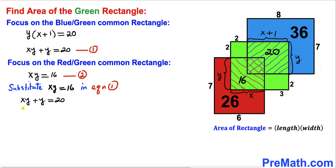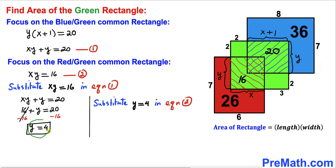Substituting into Equation 1: 16 plus y equals 20. Subtracting 16 from both sides, our y value turns out to be 4 units. Now plugging y equals 4 into Equation 2, we get 4 times x equals 16. Dividing both sides by 4, the 4s cancel, so our x value turns out to be 4 units.